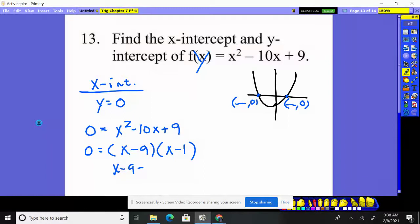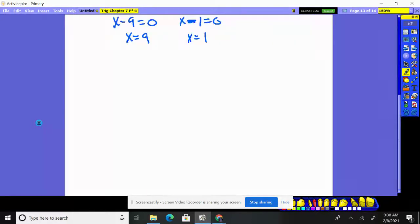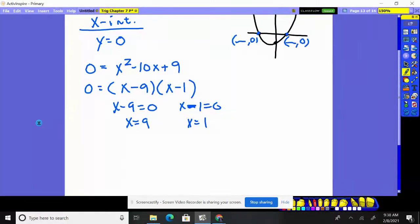So we set each equal to zero. x minus 9 equals zero, x minus 1 equals zero. Add your 9, you get 9 as one value. Add 1, 1 is another value. Don't leave them like that. I do like them written as (9, 0) and (1, 0).